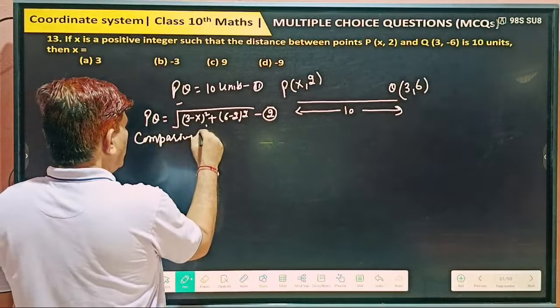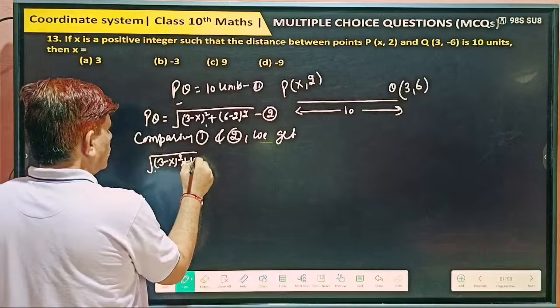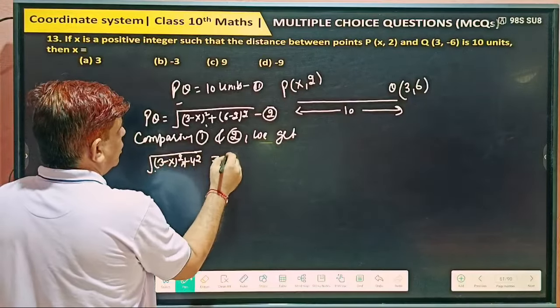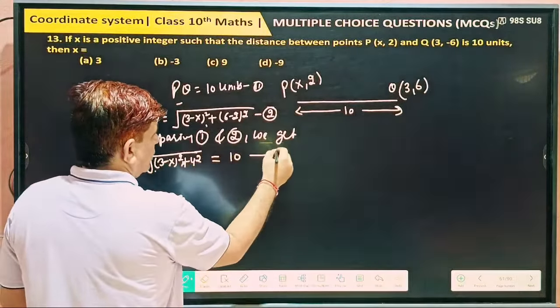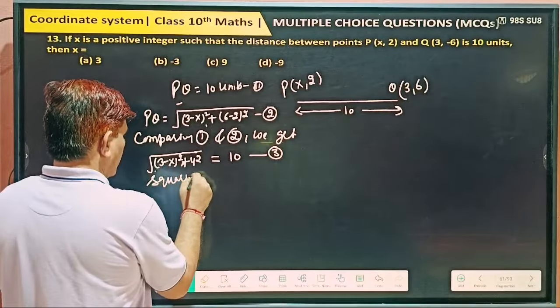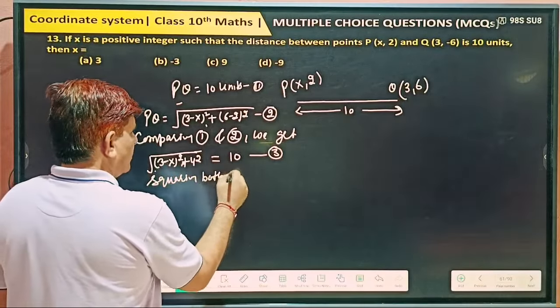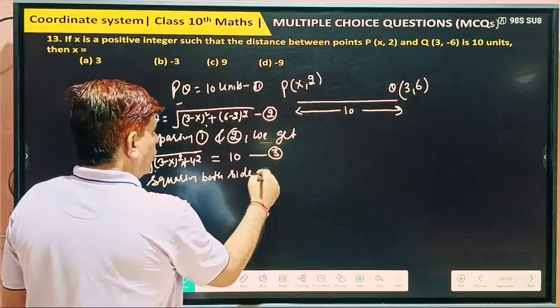This is equation 2. So comparing first and second, we get comparing left hand side are equal so right hand side also equal. So under the root 3 minus x whole square plus 4 square is equal to 10. This is your equation 3.